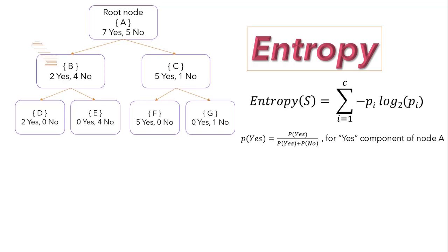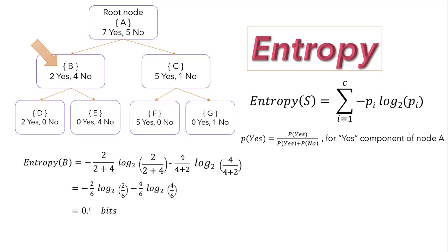Let's calculate the entropy for node B first. Here we have 2 yes and 4 no. Let's substitute these values to equation: negative of 2 over 6 - here we consider our denominator as sum of probability of yes and probability of no - so negative of 2 over 6 into log base 2 of 2 over 6 minus 4 over 6. Here we have 4 no and sum of probability of yes and probability of no is 6. So minus 4 over 6 into log base 2 4 over 6. After computing this, we can get entropy for this node as 0.92 bits.